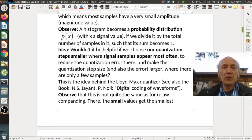Yeah, so this leads to our idea. Wouldn't it be helpful if we choose our quantization steps smaller where the signal samples appear most often and to reduce the quantization error here and make the quantization step size and also the error larger where there are only a few samples. So a larger value might be less harmful if it doesn't appear as often. So this idea is behind the Lloyd-Max quantizer.